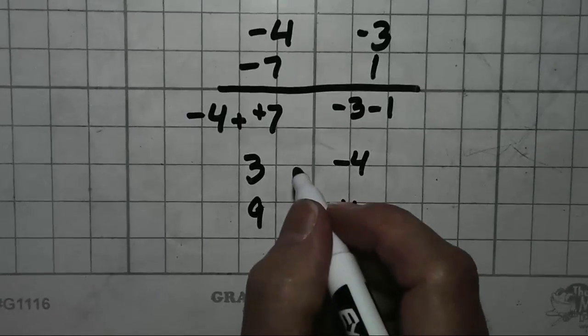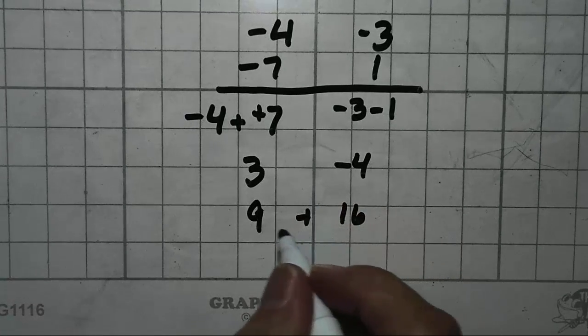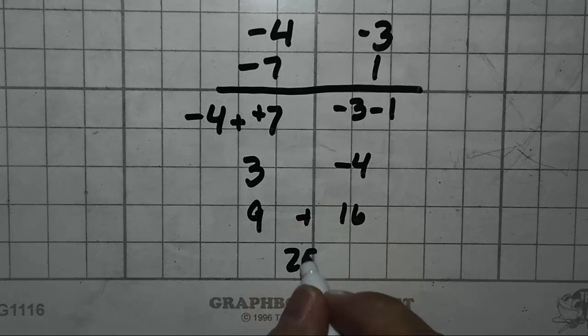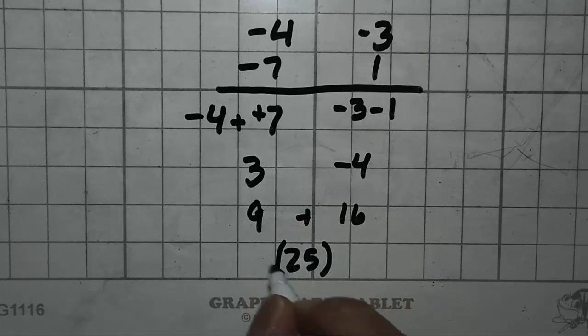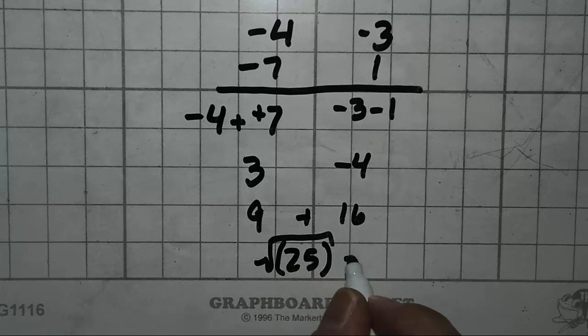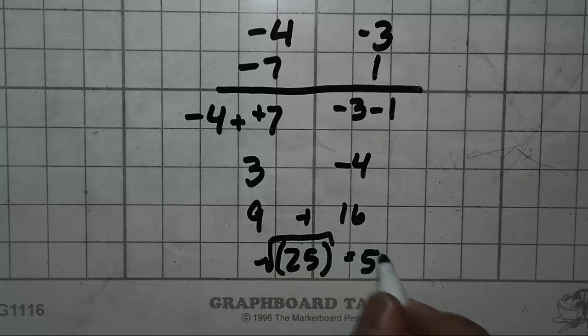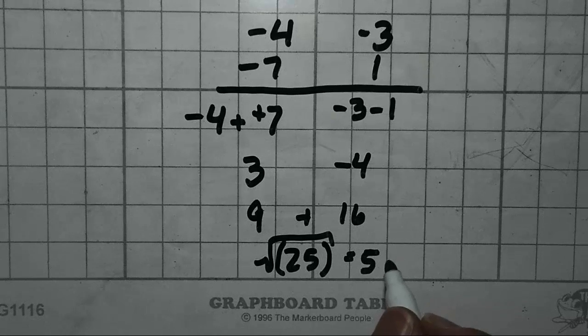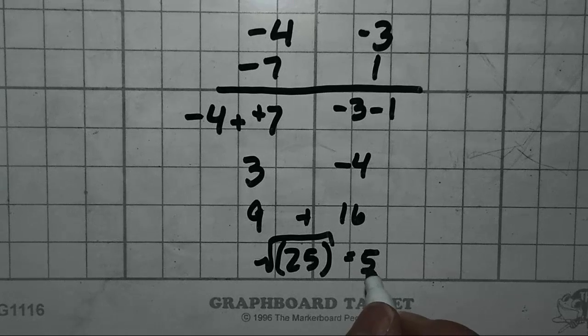And we're going to add them together. So 9 plus 16 is 25. And now we're going to take the square root of 25. And that's going to tell us the distance. Now distance is always a positive number. You know square root could be plus or minus. But distance is always a positive number. So the answer is positive 5.